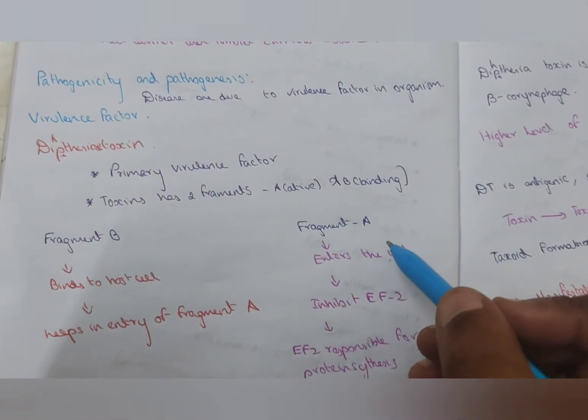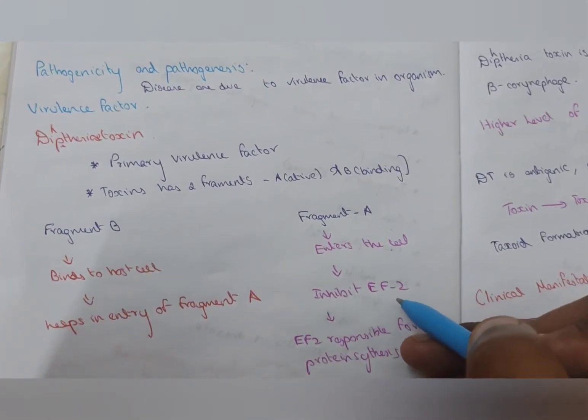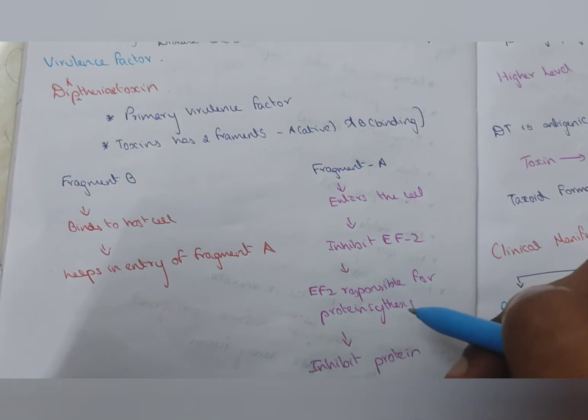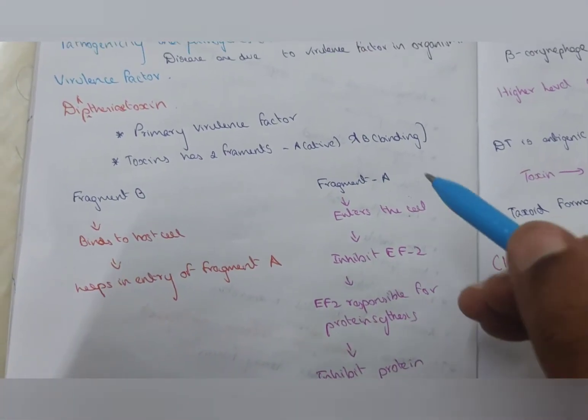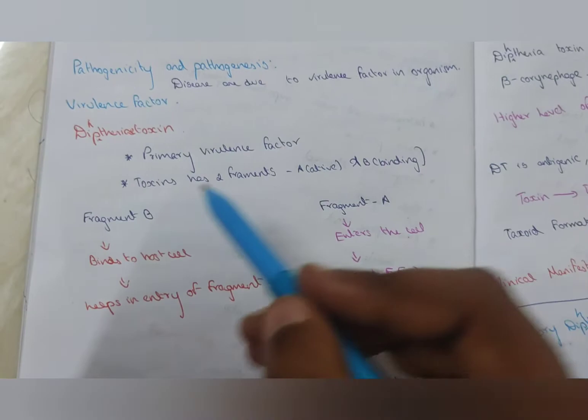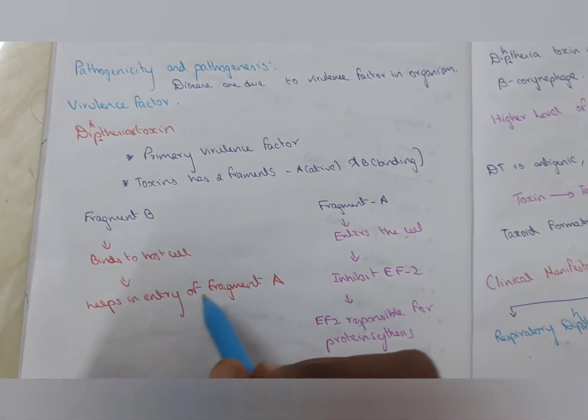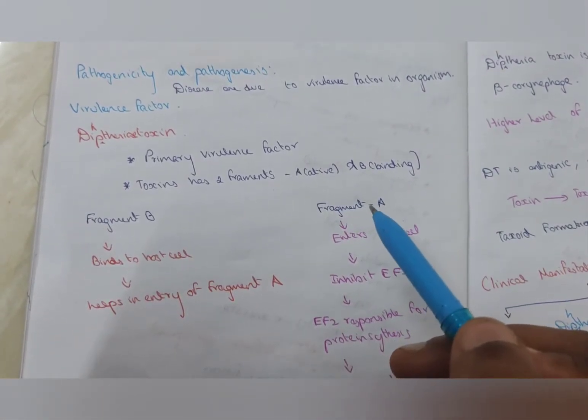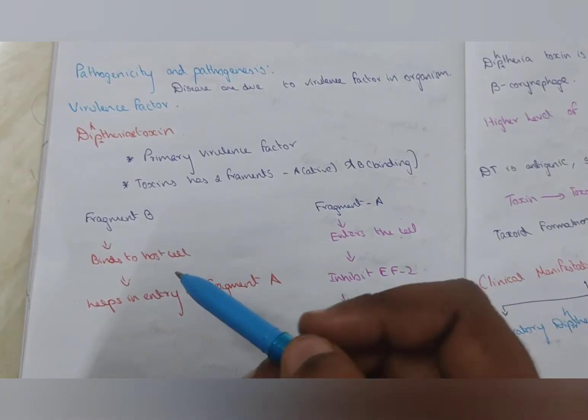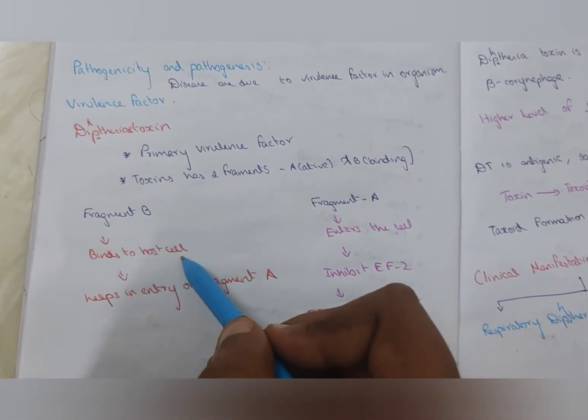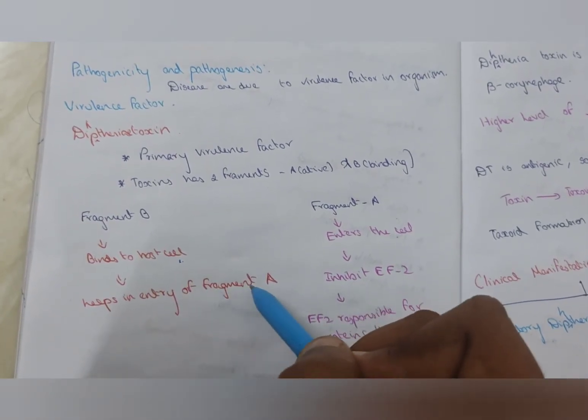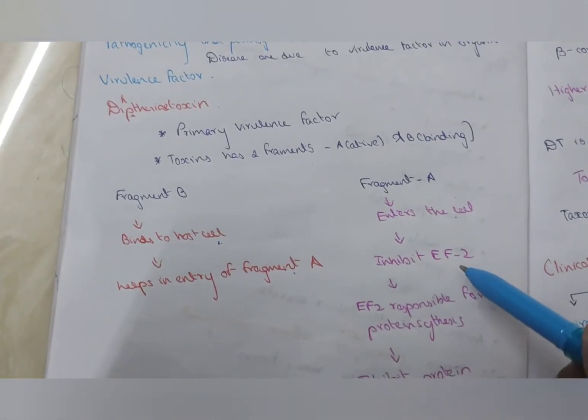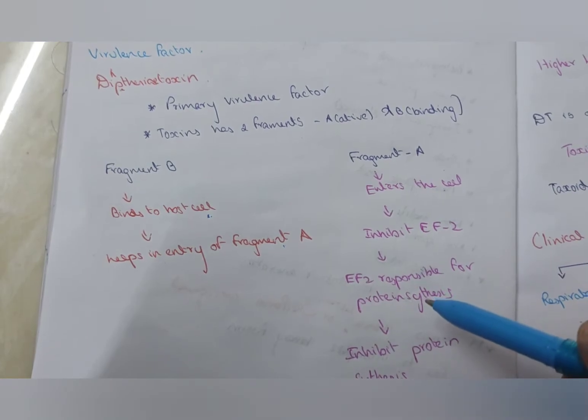The fragment A enters the cell. It inhibits the EF2, and EF2 is responsible for protein synthesis, which inhibits protein. This happens only when fragment B binds with the host cell and helps in the entry of fragment A. The fragment B only job is to make fragment A enter into the host cell. The fragment B binds to the host cell and helps in the entry of fragment A. The fragment A enters the cell and inhibits EF2.